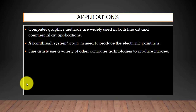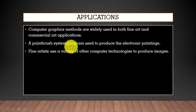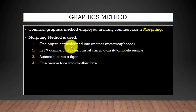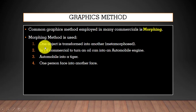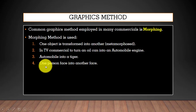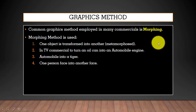Computer graphics is also used in fine art and commercial art applications. There are paint programs used to produce electronic paintings, and fine artists use a variety of technologies to produce images. Morphing is a graphic technique used to transform one object into another — for example, transforming one person's face into another's, or transforming an automobile into a tiger.